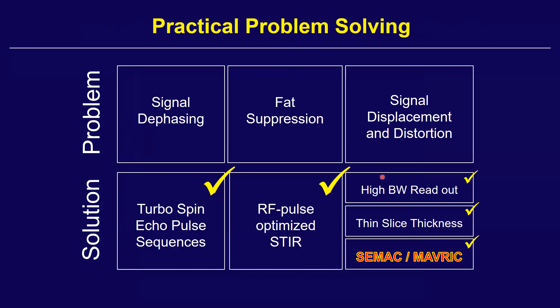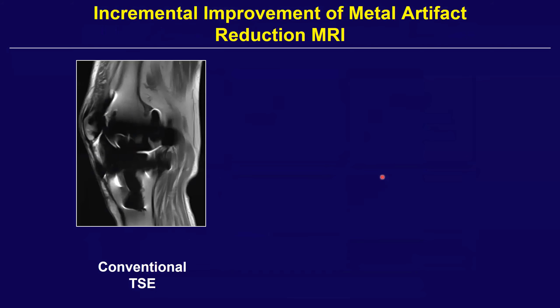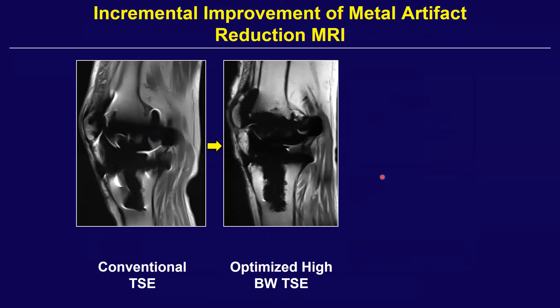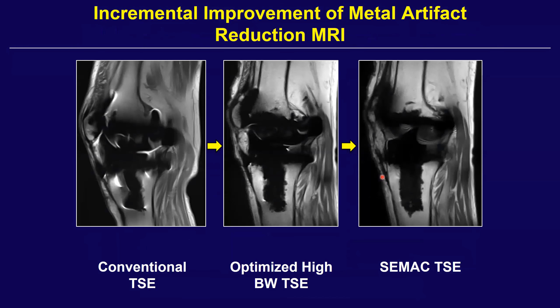Applying advanced metal suppression reduces through-plane signal displacement in the slice encoding direction — the dimension otherwise missed with high bandwidth alone. Following the evolution: from conventional TSE, to optimized high bandwidth TSE, to adding CMAC algorithms on top — which also uses VAT — all of a sudden you can see the joint space, pseudo-capsule, fluid between components, tibial component, and part of the tibial tray. You can also see the bone-implant interface to better advantage.